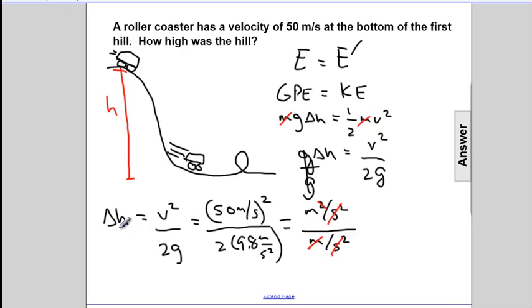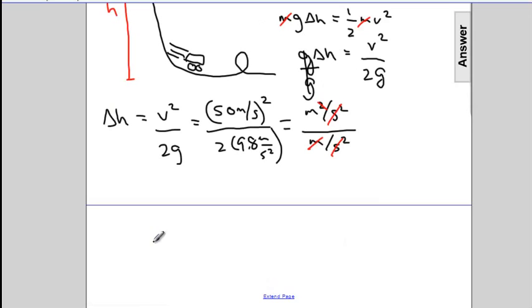And this squared will cancel that. And it leaves us with a delta H of meters. 50 squared divided by 2 times 9.8. We'll extend the page. Reveal the answer.